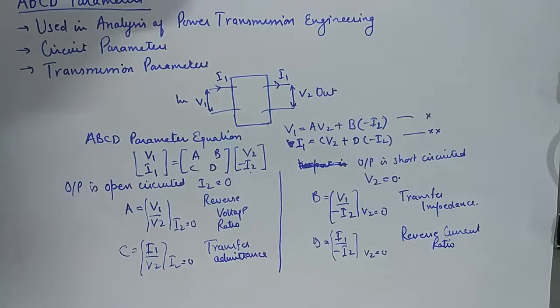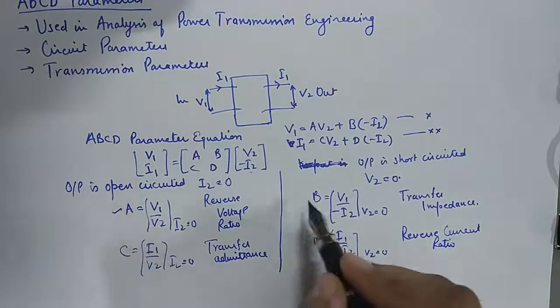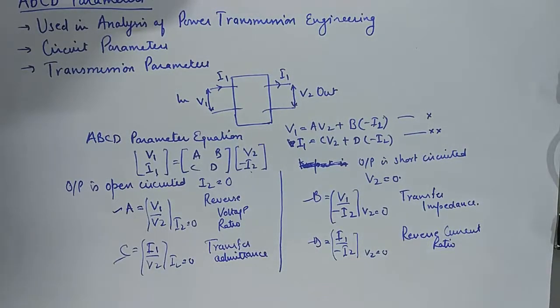And that is how all these parameters A, B, C, and D are found. The nomenclature is pretty easy; you can simply find the names from the kind of ratios they are.